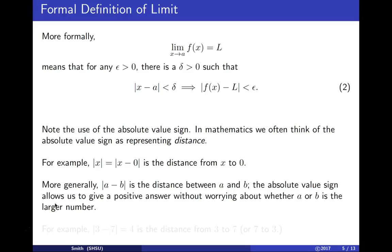For example, how far is it from 3 to 7? The absolute value of 3 minus 7 is 4. The distance from 3 to 7 is the same as the distance from 7 to 3. Either way, subtract, put it within the absolute value sign and you get distance.